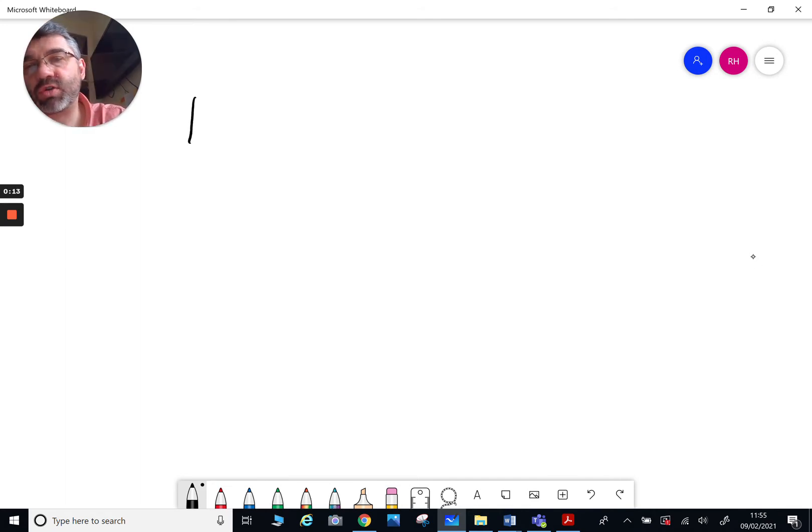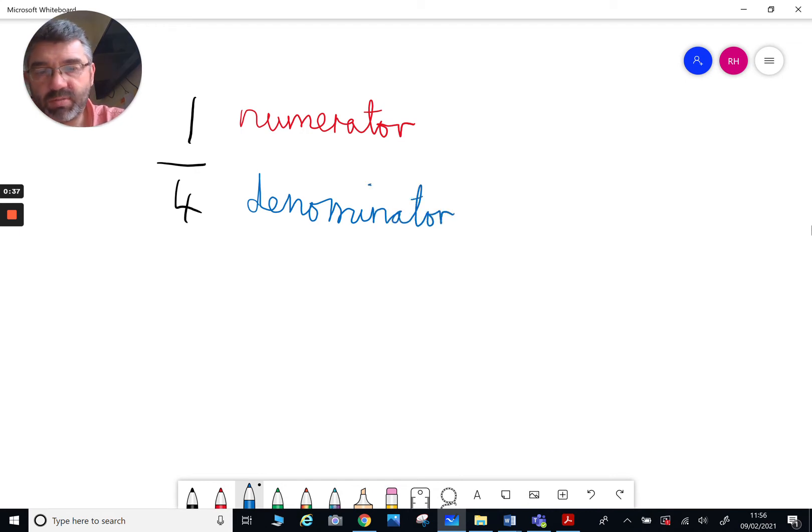So let's say we've got a fraction of one quarter. The number on the top is called the numerator, and I'm going to be using this language now to get you used to it. The number on the bottom is called the denominator. That's your top number and your bottom number.